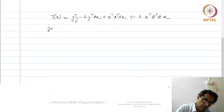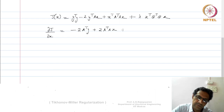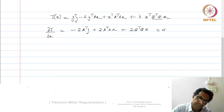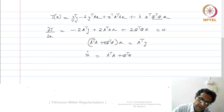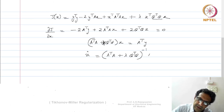Taking ∂J/∂x gives minus 2Aᵀy plus 2AᵀAx plus 2λQᵀQx = 0. Since QᵀQ is a symmetric matrix, this simplifies to (AᵀA + λQᵀQ)x = Aᵀy. Therefore, x̂ = (AᵀA + λQᵀQ)⁻¹ Aᵀy.